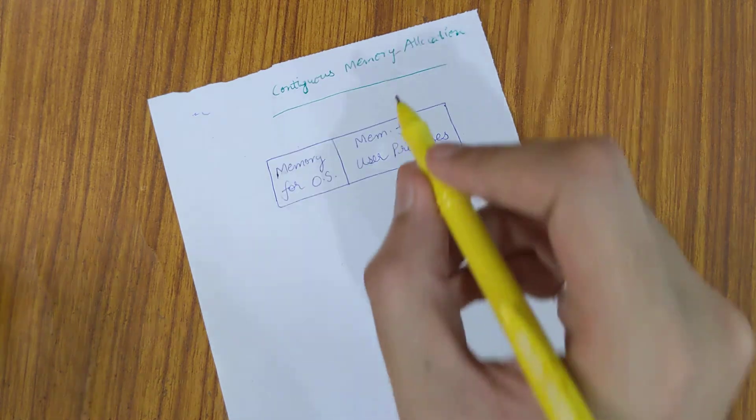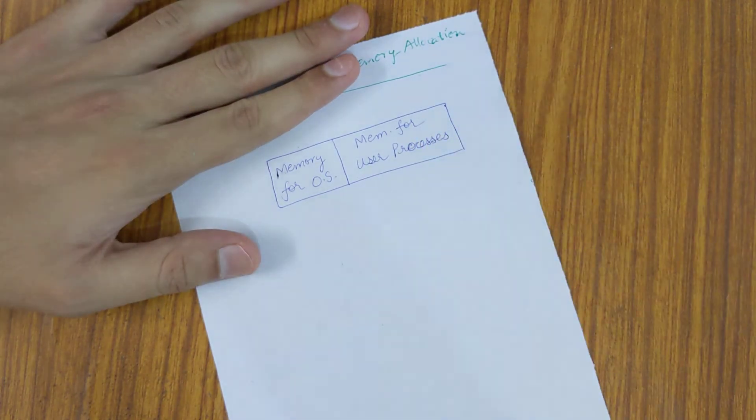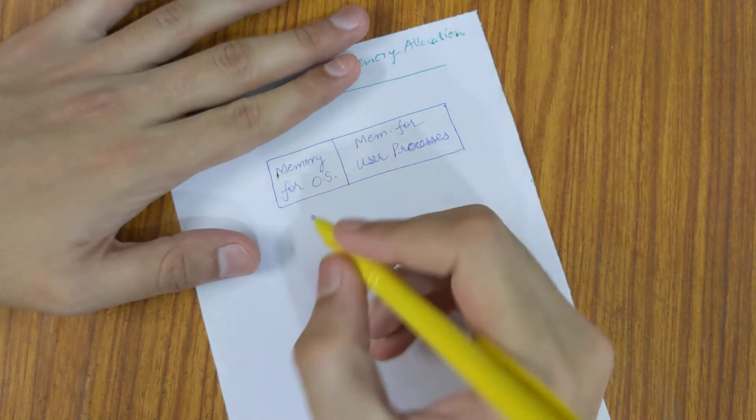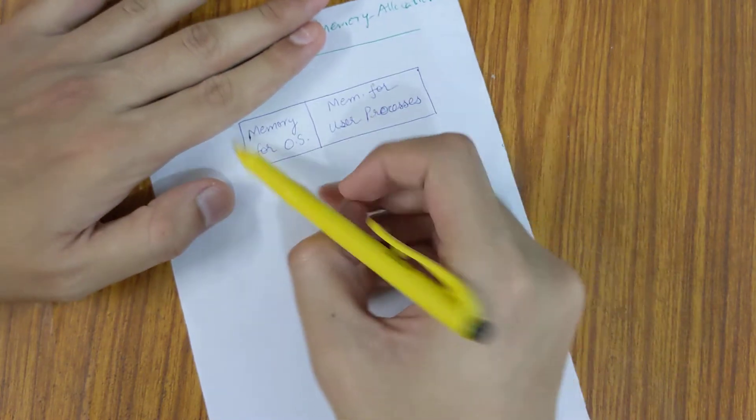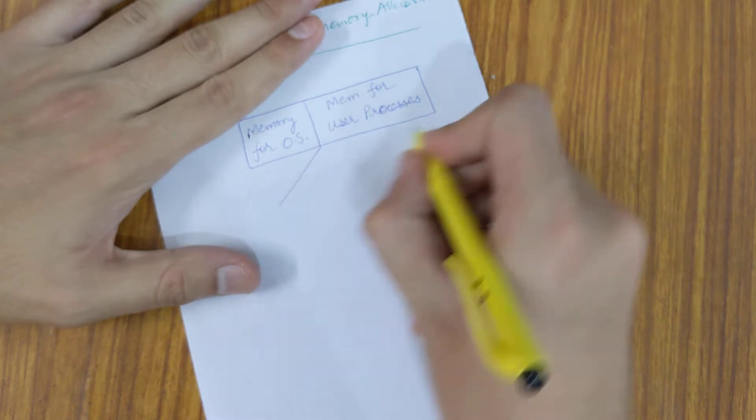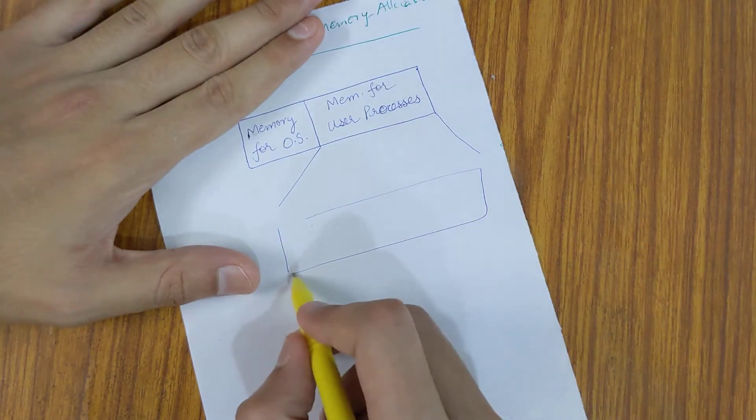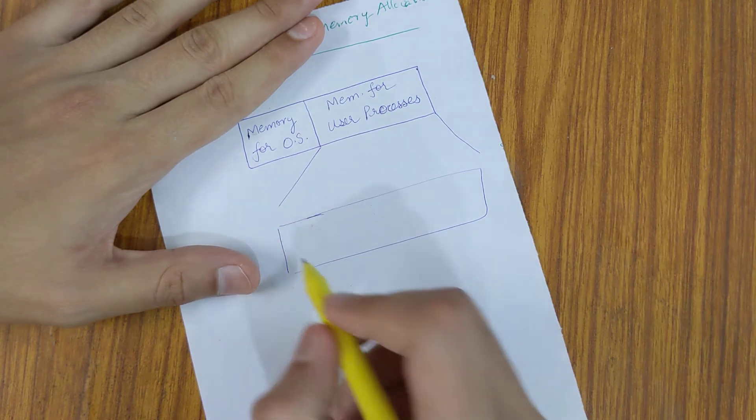In the memory for user processes, the memory is allocated to a single process in a contiguous chunk. For example, let's say if we expand this, it's something like this, and suppose we have a few processes.